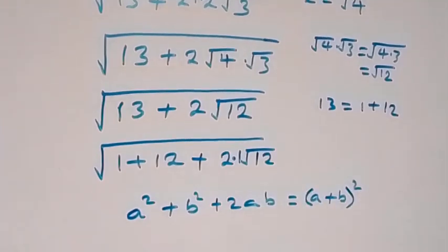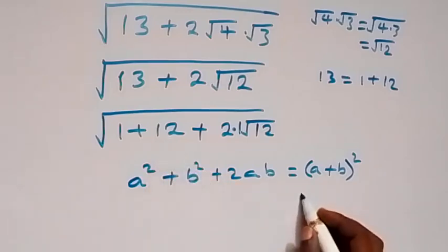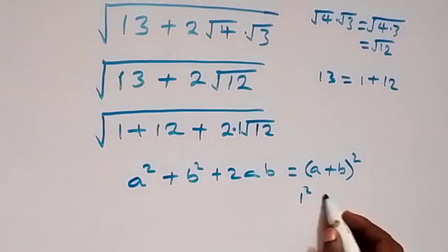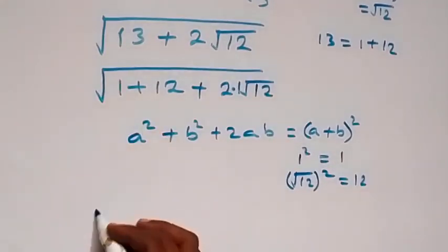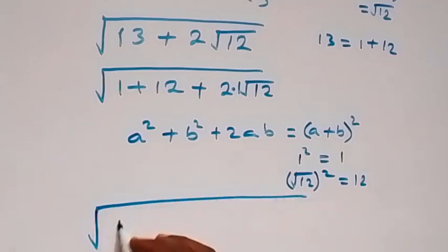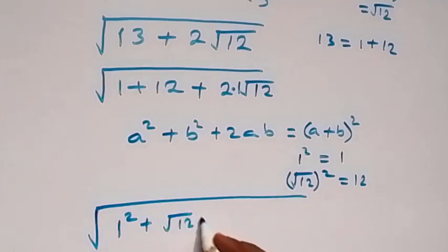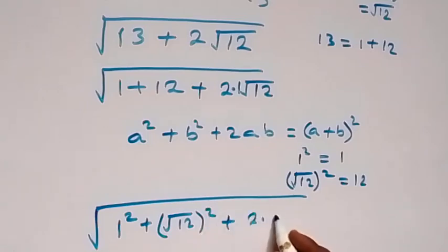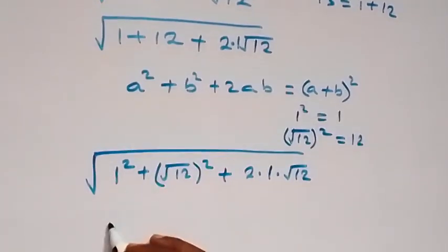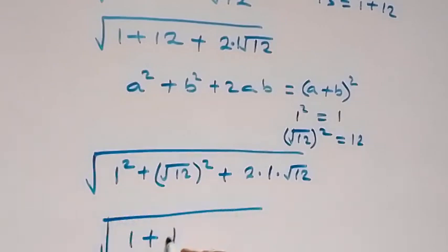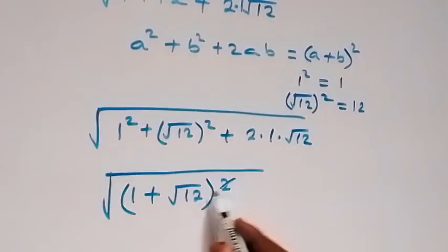So from here, we can write 1 as 1 squared and root 12 squared is 12. This now becomes square root of 1 squared plus root 12 squared, then plus 2 times 1 times root 12. So when we compare this with the (a plus b) squared pattern, this will simply become square root of (1 plus root 12) all squared. The square and square root cancel.